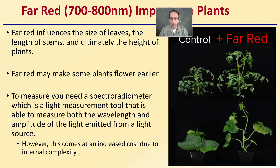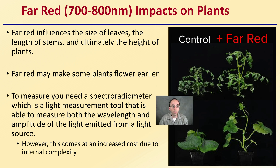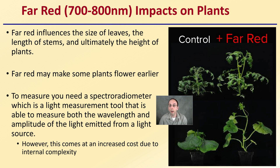Now we're going to talk about Far Red light — some similarities to red light, but a little different. Far Red influences the size of the leaves, the length of stems, and ultimately the height of the plants. Far Red may make some plants flower earlier. To measure it, you need a spectroradiometer, which is a light measurement tool able to measure both the wavelength and the amplitude of the light emitted from a light source. This comes at increased cost due to internal complexity of the device. Far Red light is in the 700 to 800 nanometer range.